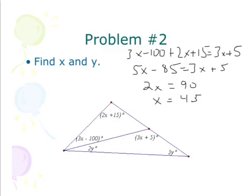So now that I have x equals 45, I can figure out this angle right here. Well, 3 times 45 will give me 135 plus 5 gives me 140. So I get 140 for that angle.